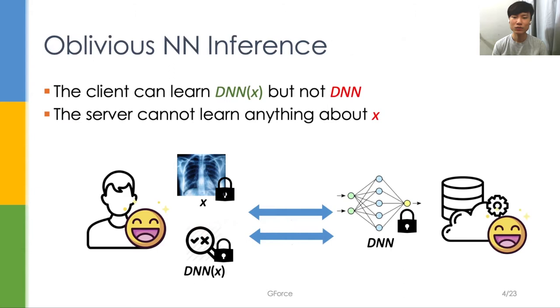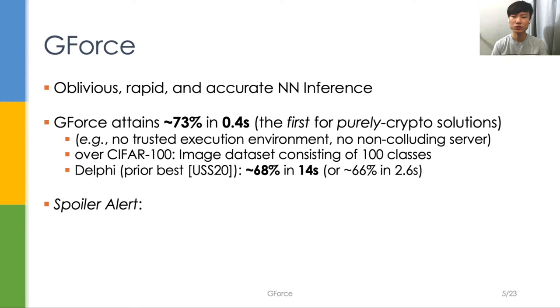That's why we need oblivious neural network inference. The client can learn the query result but not the model, while the server can know nothing about the query. Our framework, GeForce, aims to support oblivious, rapid, and accurate neural network inference.